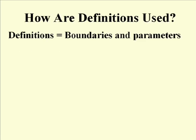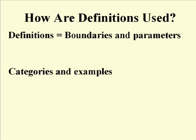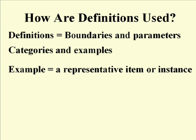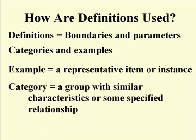How are definitions used? Definitions are really the clear statement of the boundaries and parameters given to an item, a group, or a situation. These parameters are important because they help clarify examples and categories. An example is simply a single representative of an item or an instance of something. Anything can be an example, but that doesn't tell us anything because the example is tied to a group in which that example is a representative member.